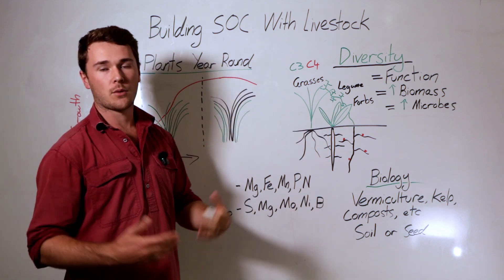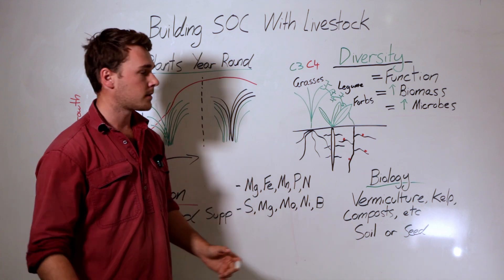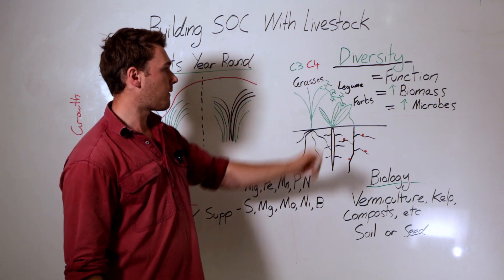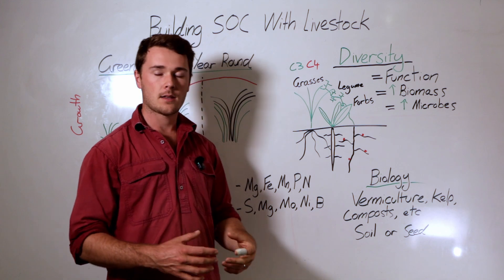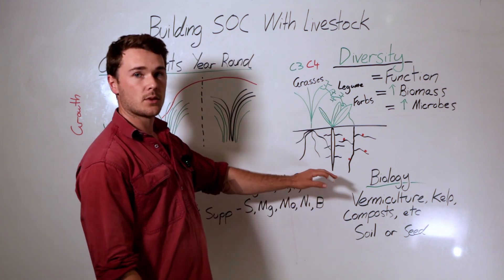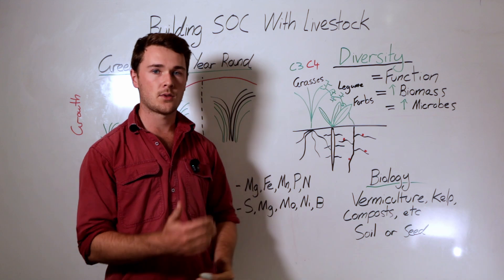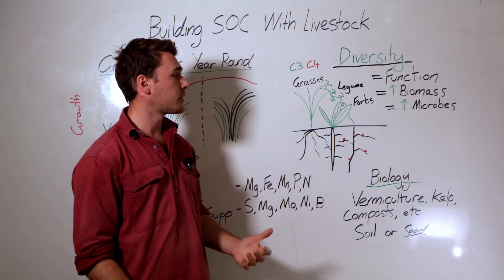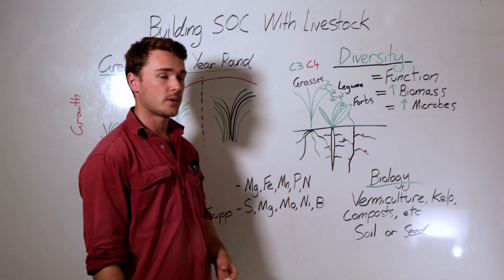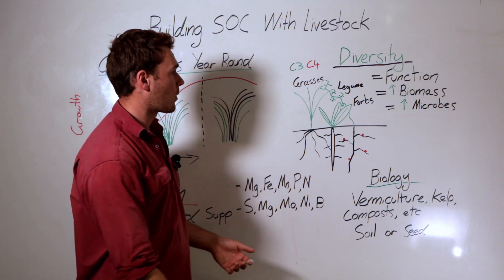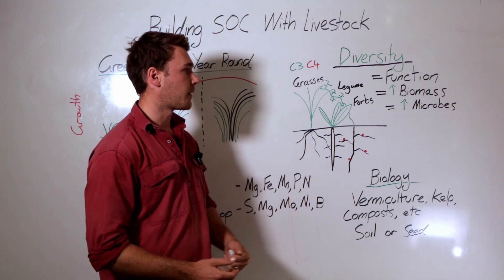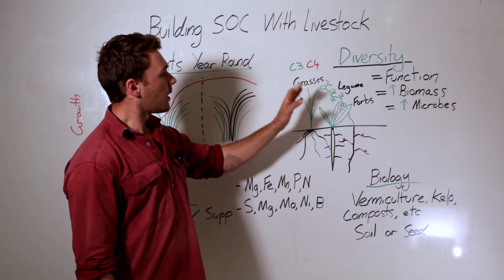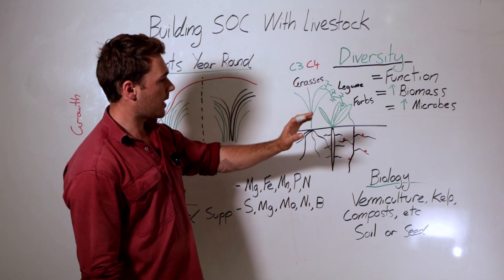Next are forbs — a broad category covering a whole range of plants. This is where we can really get our biodiversity and increase our functions. Forbs tend to have a taproot that goes into the subsoil, allowing great nutrient cycling and accessing a wide range of minerals. There are also medicinal benefits and flowers to attract pollinators and beneficial insects. Legumes fix nitrogen and also attract beneficial insects. In your pasture you want at least a C3, a C4, a legume, and at least two forbs.